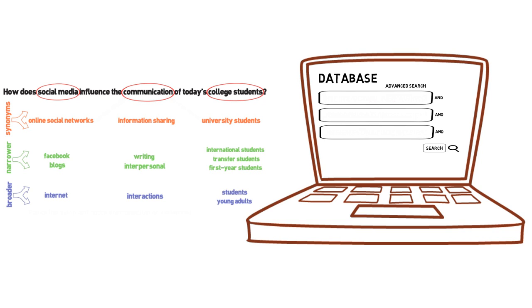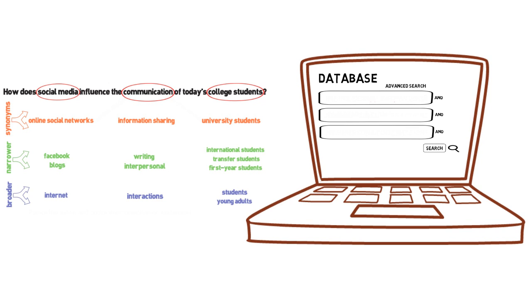If you're finding too many results, you can experiment with using narrower terms. If you're not finding enough, try out your broader terms.